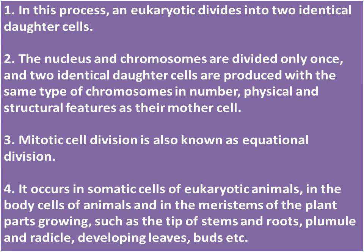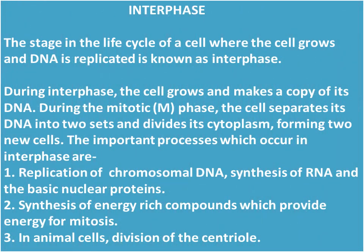Mitotic cell division occurs in somatic cells of eukaryotic animals, in the body cells of animals, and in the meristems of growing plant parts such as the tip of stems and roots, plumule, radicle, developing leaves, and buds.